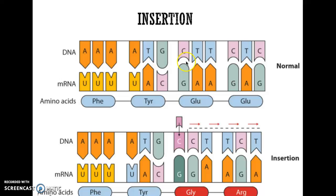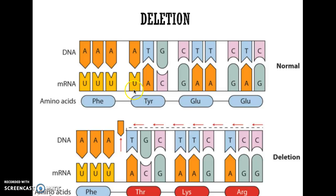Here's an example of insertion: if we have C, T, T and insert an extra C in there, every single codon shifts one place to the right, so all of our amino acids are going to be different from there on. And for deletion: if there are four A's and we take away one A, all of these shift to the left, so every single amino acid will be different from there on.